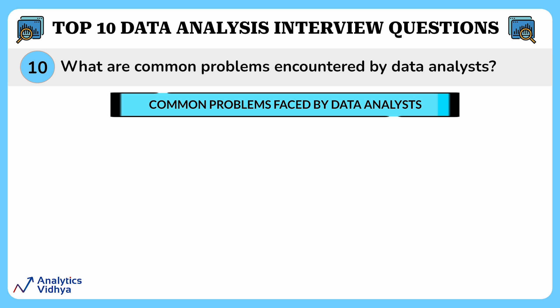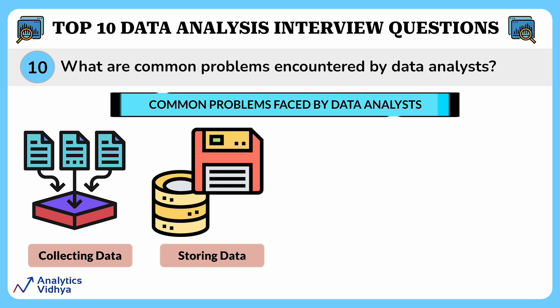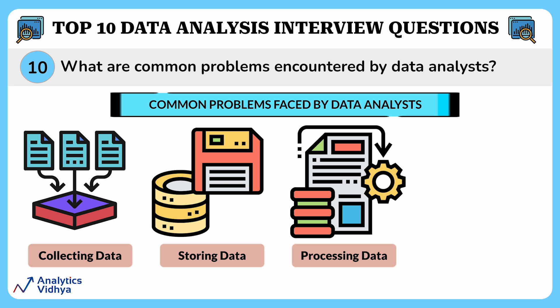This question asks: what are the common problems that data analysts encounter during analysis? Problems can occur at four different steps. First, with the collection of data — data can be scattered across different sources, making it difficult to consolidate; it may be incomplete, inaccurate, or sensitive, requiring careful handling. Next is the challenge of storing data — data can be huge, requiring scalable storage solutions, and needs to be backed up, protected from loss, and accessible only to authorized users.